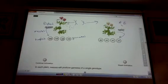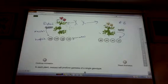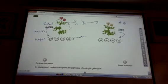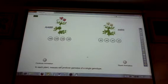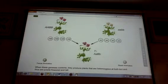Okay? So, not real interesting here, but the interesting thing will come up here in a second. Let's go ahead and cross-pollinate here and see what the genotype is for the F1 offspring. When these gametes combine, they produce plants that are heterozygous at both loci, and thus are purple-flowered and tall.